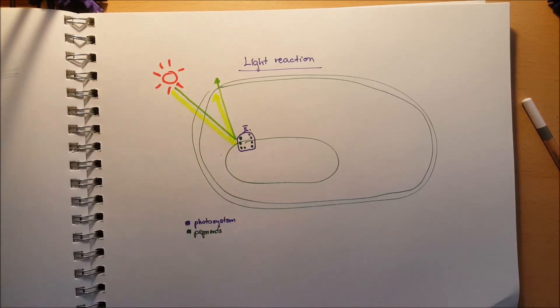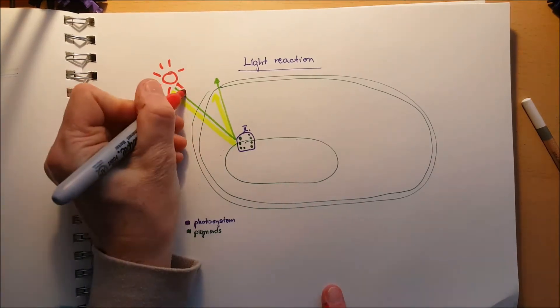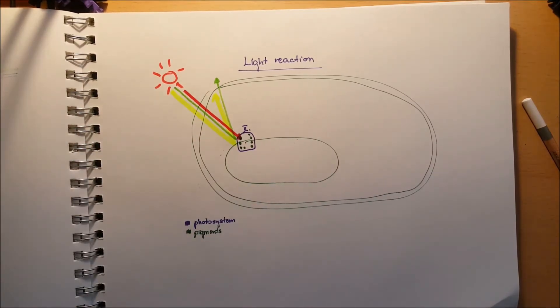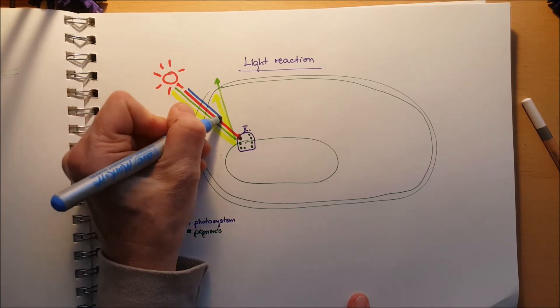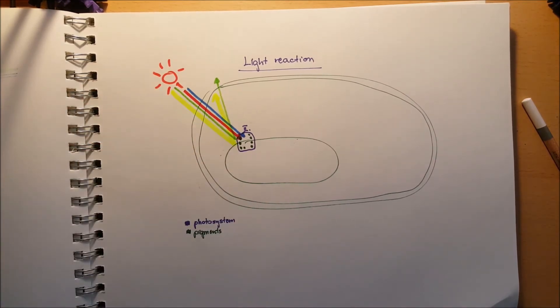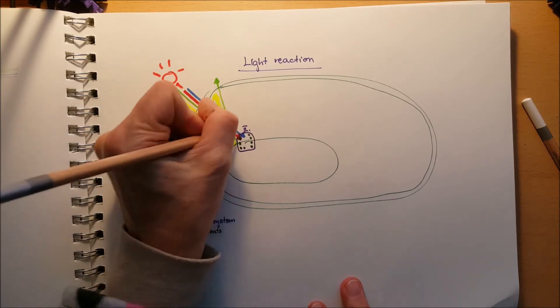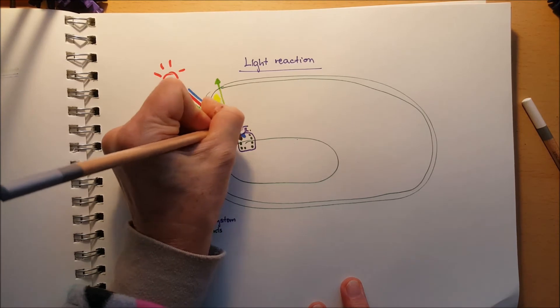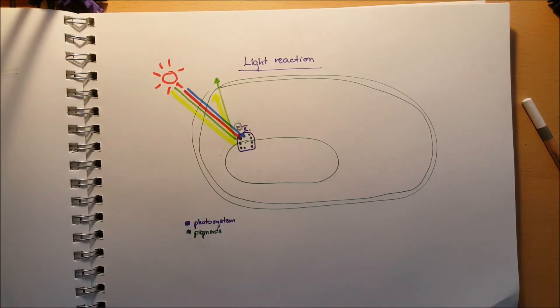But it bounces back because the pigment does not absorb its energy. Let's say the yellow is coming. It's going to be bounced up. That's why we see the plants pretty much green and yellowish. The red one comes from the sun. And it's going to be absorbed by the pigments as well as the blue. So these are the two lights that they can excite the pigments inside of the photosystem in the light harvesting complexes.